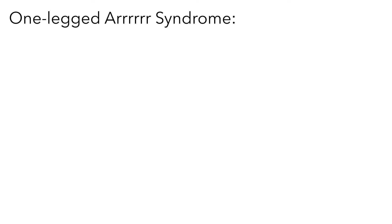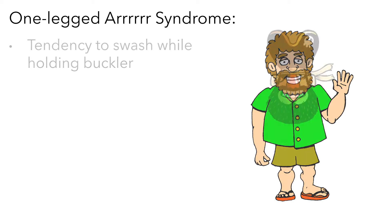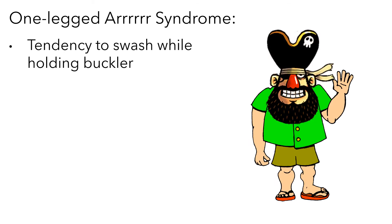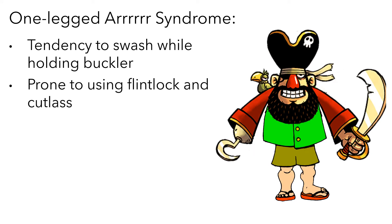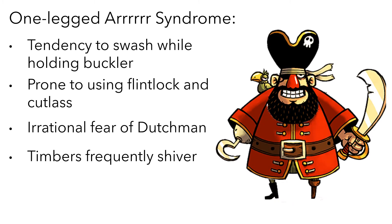Let's imagine that there is a new disease going around called the one-legged R syndrome. After someone gets infected, symptoms start to appear over the next several days. These symptoms include having a tendency to swash while holding a buckler, being prone to using a flintlock and cutlass, having an irrational fear of a dutchman, and finding that your timbers frequently shiver.